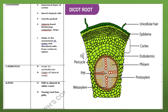The thickened suberin band areas in endodermal cells are called casparian strips. So in the endodermal layer, few cells have suberin band thickening, and those thickened cells are called casparian strips. The function of the endodermis is to help in the movement of water and dissolved salts from the cortex to the xylem.